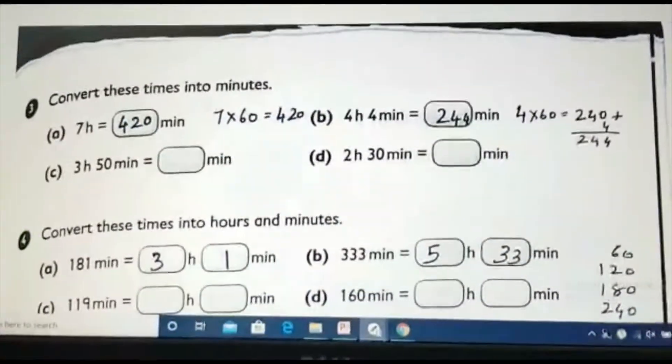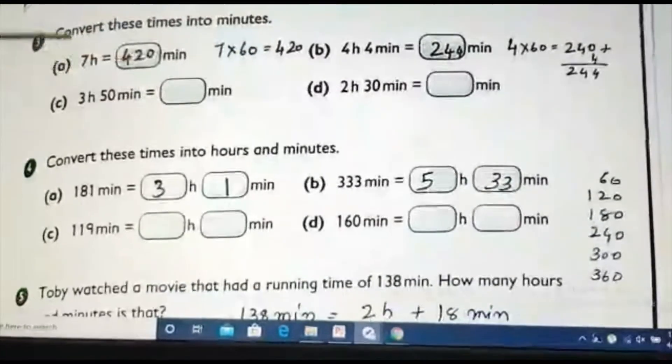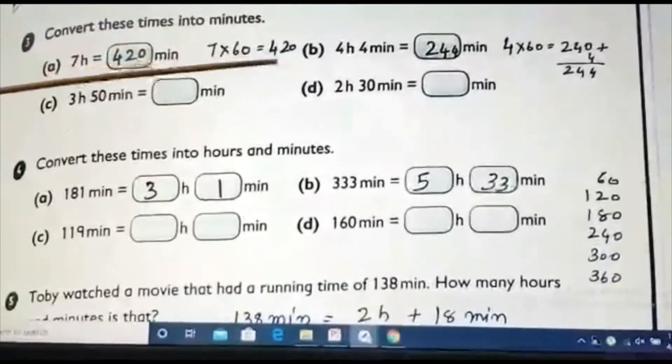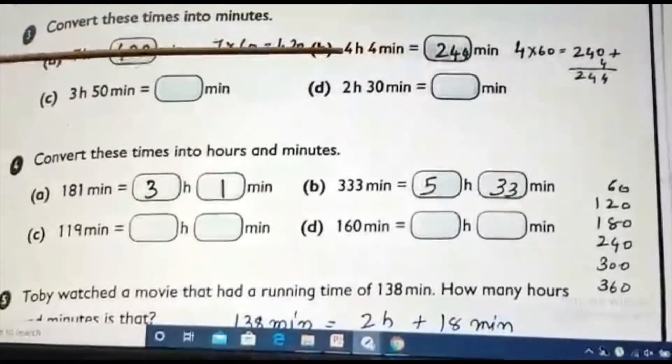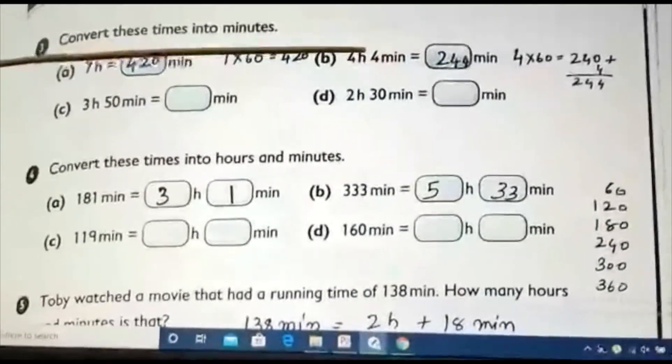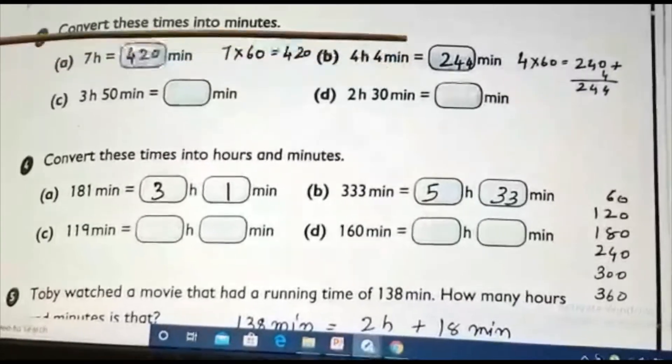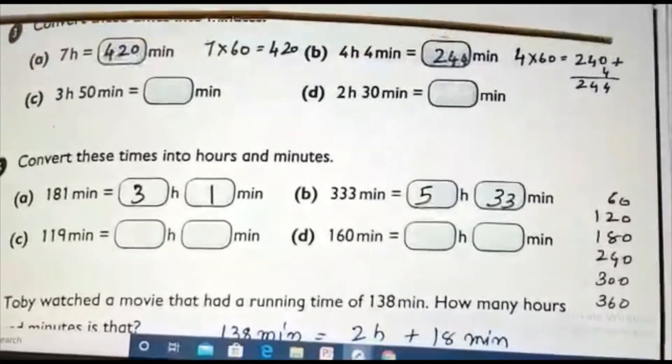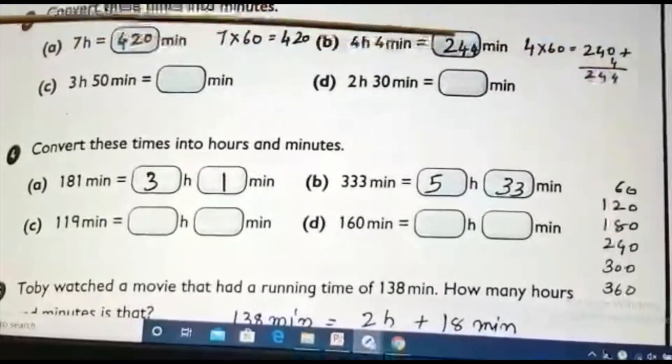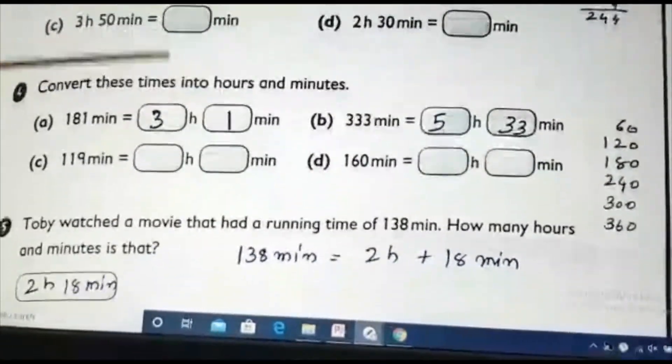Coming to the next one. Same thing. Convert into minutes. 7 hours. Means what? 7 into 60. That is 420 minutes. 4 hours, 4 minutes. Means what? We want to convert to minutes only. So, this 4 we will not change. It will remain as such. 4 hour means 4 multiply 60. That is 240 plus 4. It is 244 minutes. Same way you can do the rest.